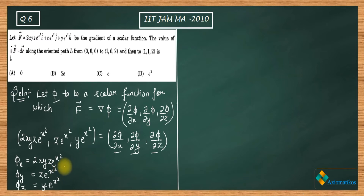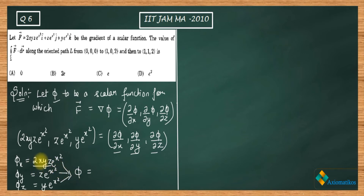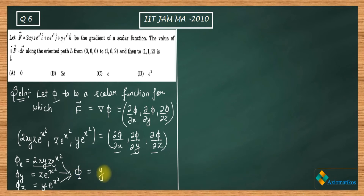You can use integration or directly guess. I am making a guess from observation. We need a function phi such that differentiating partially with respect to x gives 2xyz·e^(x²). When differentiating with respect to y, there is no y component in the result, which means y appears linearly in phi — it cannot be y² or anything else.